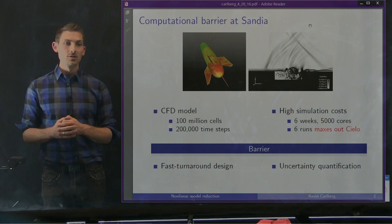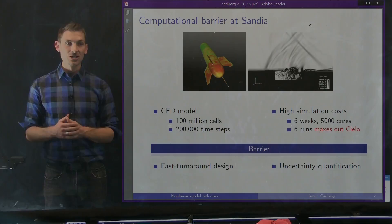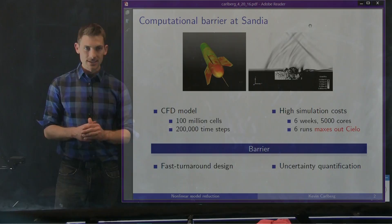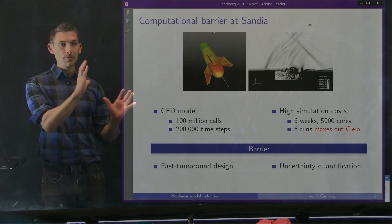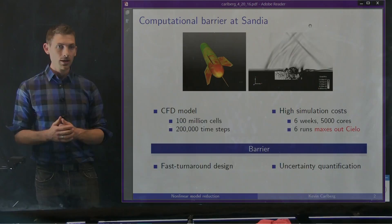Just to give some context: even though we are a national lab with a lot of computing resources, just six of these runs going concurrently completely maxes out our allocation on our supercomputer CLO. So this is a very expensive simulation even for a national lab context, and there really is a barrier placed between this valuable set of computational models and a range of time-critical applications.